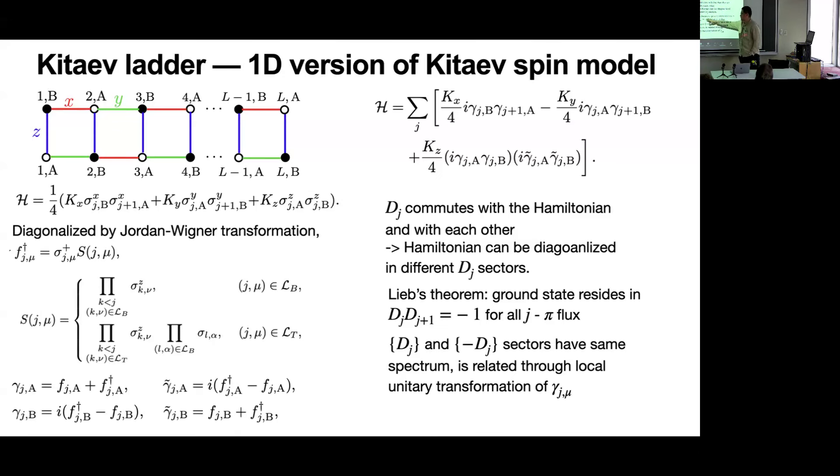There's a theorem by Lieb: the ground state resides in the pi-flux state. Pi-flux means D_j times D_{j+1} equals minus one, so you choose the D_j sector as plus one, minus one, plus one, minus one, etc. But there are two options because you can have plus one, minus one, or minus one, plus one. These D_j sectors have the same spectrum, exactly the same energy spectrum.